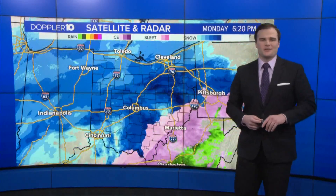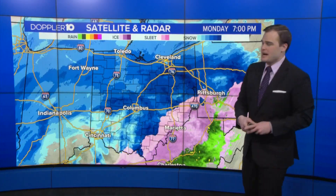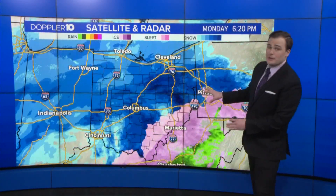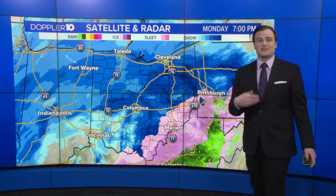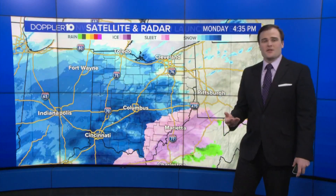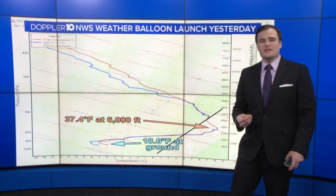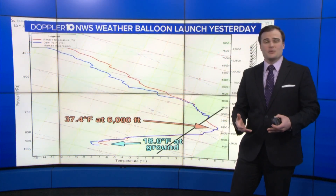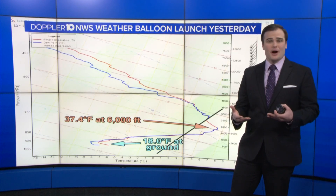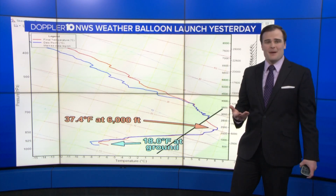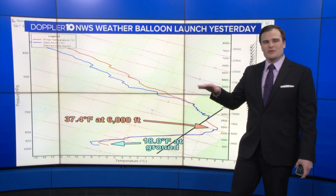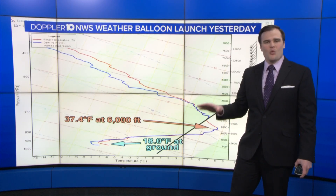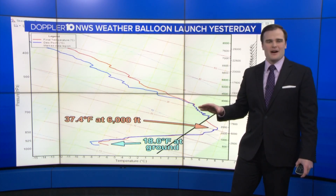Looking at the radar that we saw yesterday across Central Ohio, you can see what looked to be a lot of snow falling, but was actually sleet. The reason for this is not an issue with the radar, but actually it was picking up snow in the upper parts of the atmosphere, but it was falling into a warmer layer of air.